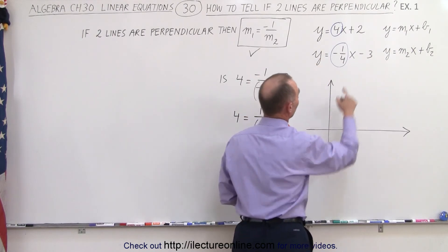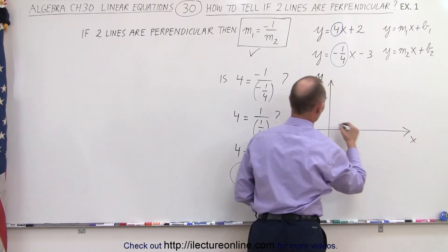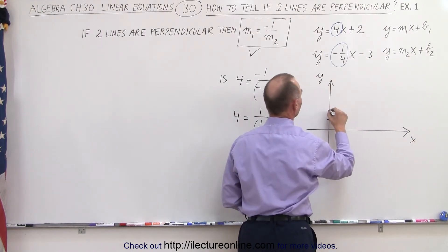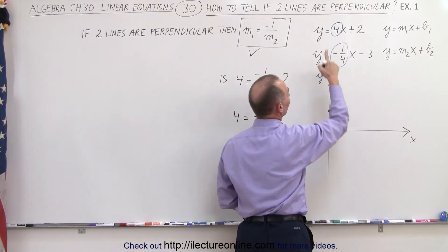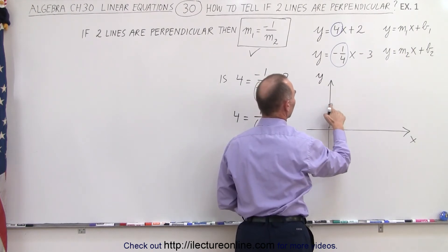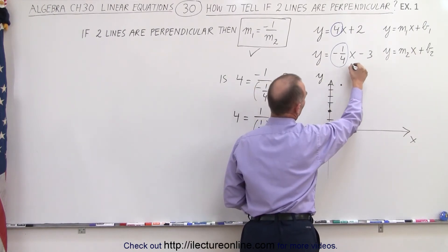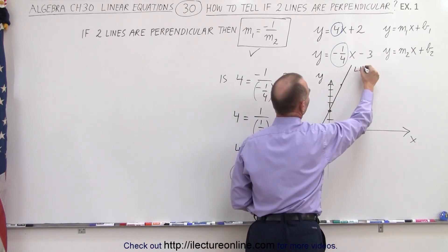Let's graph the first one. Notice the intercept is 2 - this is the y-axis, this is the x-axis. So 1, 2, the intercept is right there. The slope is 4 to 1, so we go up 4 and over 1. Let me make that a little bit bigger. So 1, 2, 3, 4, and over 1 right there. I can connect those two points, and there is line 1.